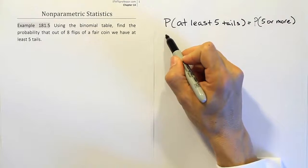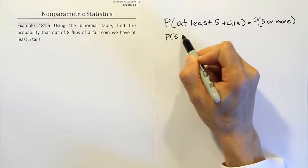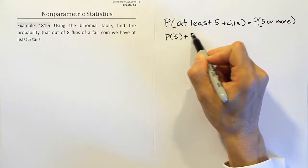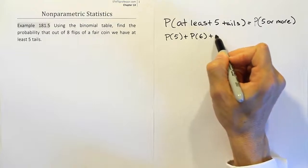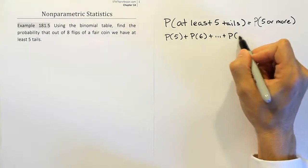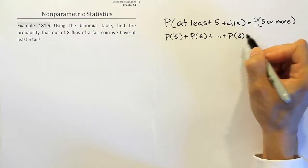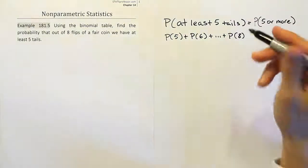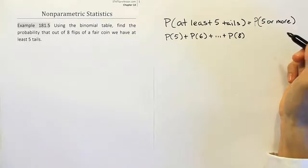Five or more means essentially the probability that it's five plus the probability that it's six plus dot, dot, dot, all the way up to the probability that it's eight. I stop at eight because there are only eight flips of the coin. You certainly couldn't have more than eight tails if there's only eight flips.